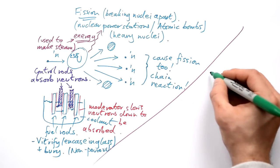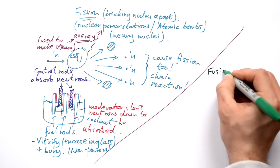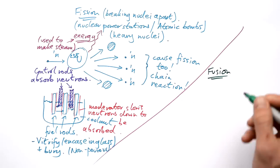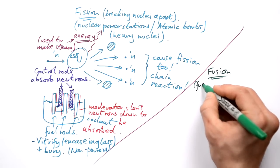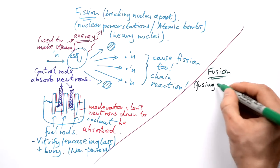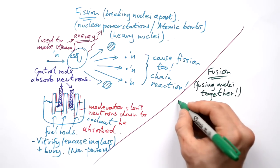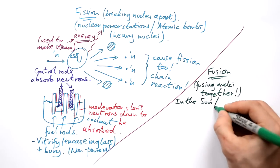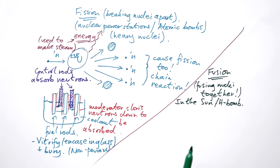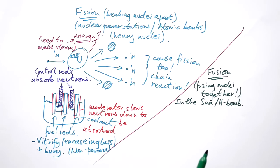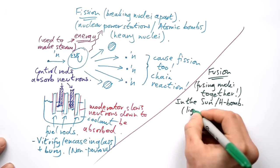But there is another type of nuclear reaction that can take place. And that is fusion. Fission is breaking nuclei apart. Fusion is fusing nuclei together. Now this happens in the sun and you can also have another type of nuclear bomb called a H-bomb. And you'll see why it's called that in a minute. Now scientists have been trying to make nuclear reactors that use fusion instead of fission for decades now, but they've never managed to get it to work. So this happens with light nuclei.